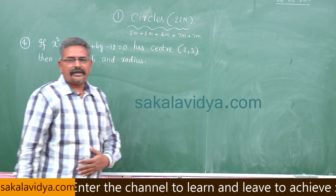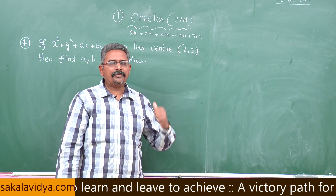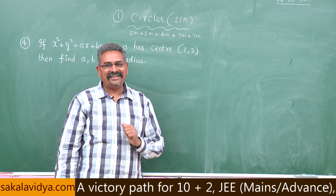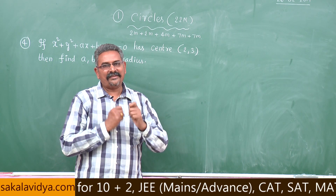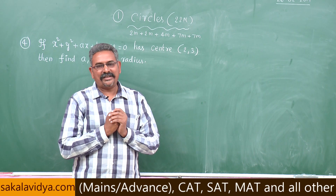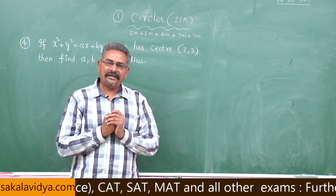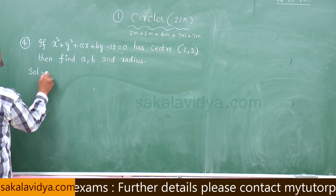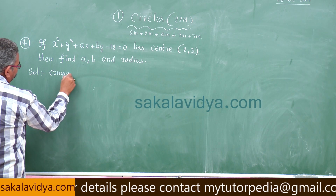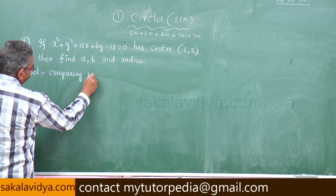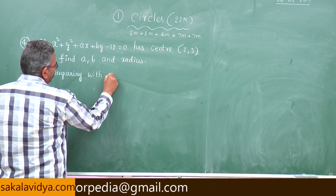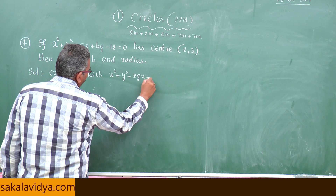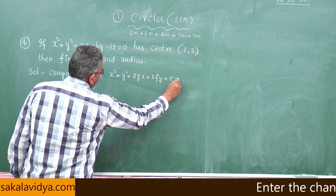My dear students, generally you think that this problem is related to the previous problem — that is correct — but in this problem some sort of typical concept is there. So my suggestion is better to concentrate on this problem also. Now comparing with x squared plus y squared plus 2gx plus 2fy plus c is equal to 0.